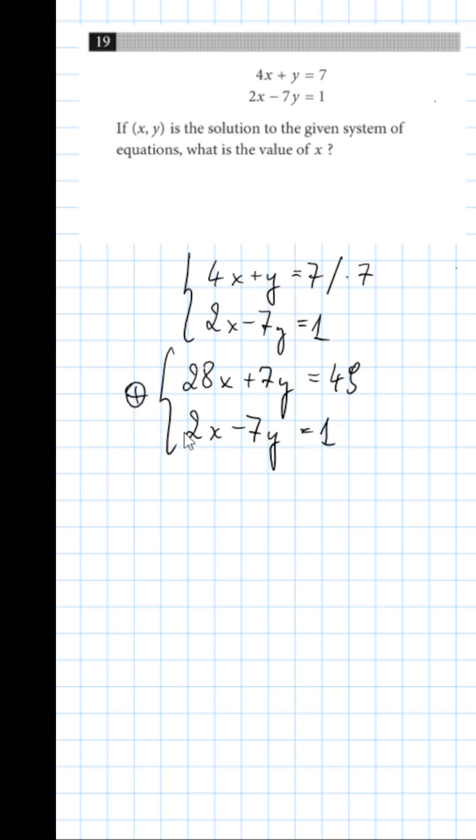Now let us sum both sides, so we obtain 50. The y cancel out, because we have 7y and minus 7y, and 30x.